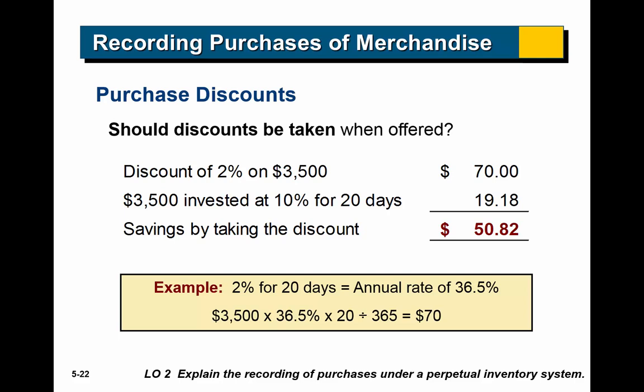Is it really worth it to take those discounts? Here's how to figure it out: if you take a 2% discount on $3,500, that's $70 saved. If you were to invest that same $3,500 and earn 10% on it for the same 20 days — because that's the extra time you'd have by paying on day 30 instead of day 10 — that would earn only $19.18. So you're actually coming out way ahead by taking the discount. It really makes sense for the buyer to take advantage of it.